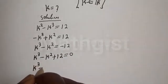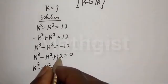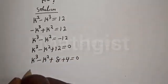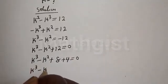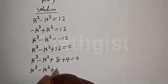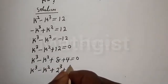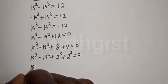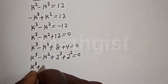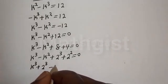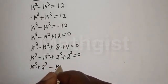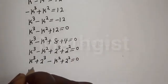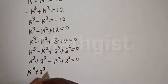k raised to power 3 minus k squared plus 12 can be written as: 8 plus 4 equals 0. Then k raised to power 3 minus k squared plus 8 can be written as 2 raised to power 3, plus 4, which is 2 squared, equal to 0. Now let's compare: k raised to power 3 plus 2 raised to power 3, minus k squared plus 2 squared, is equal to 0.